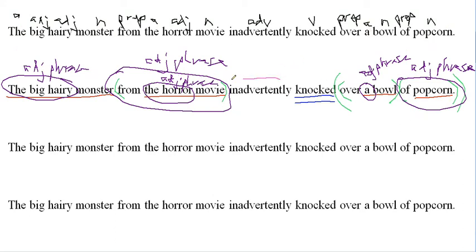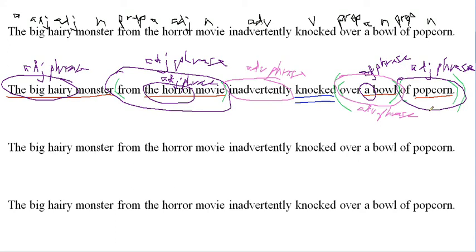Let's get those adverb phrases. The adverb phrase is specifically those adverbs or combination of adverbs working together. Remember we said 'over a bowl' is working as an adverb phrase. We could label the whole thing — 'over a bowl of popcorn' — that whole phrase is actually working as an adverb phrase. Typically it follows whatever that first prepositional phrase is. That takes care of all of the phrases.